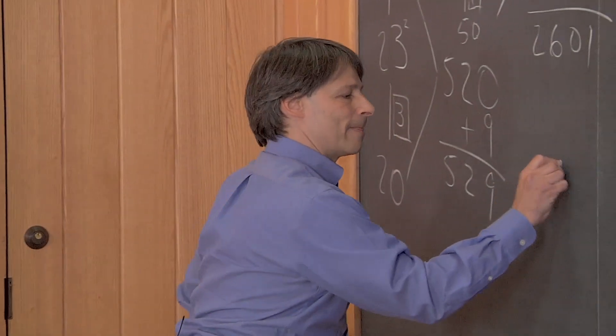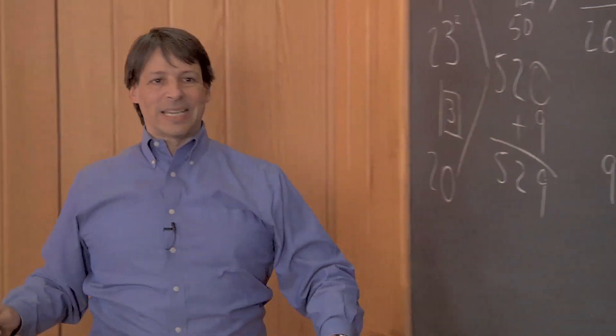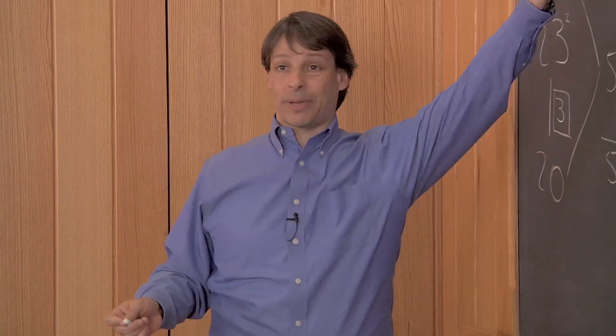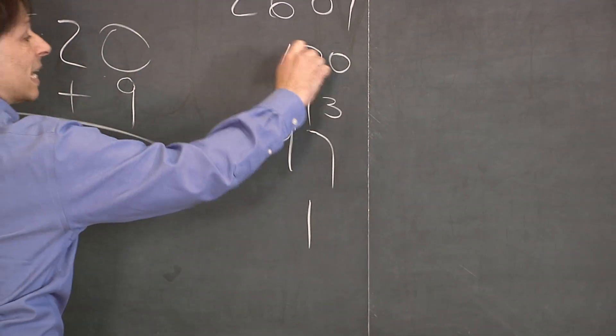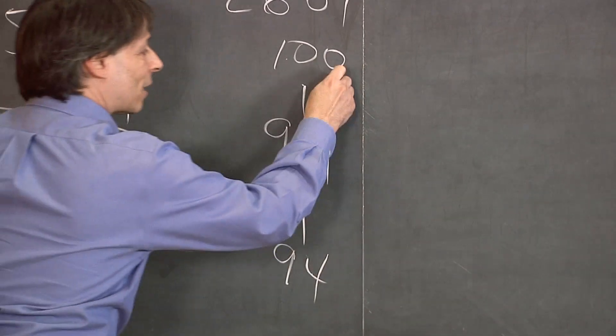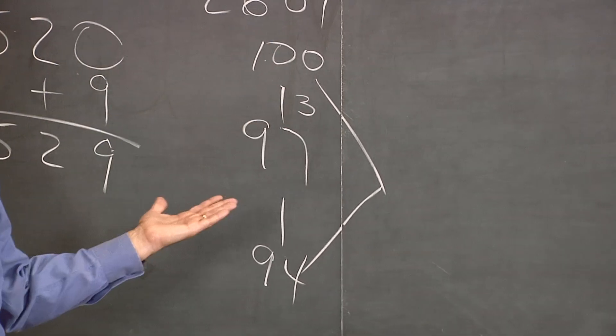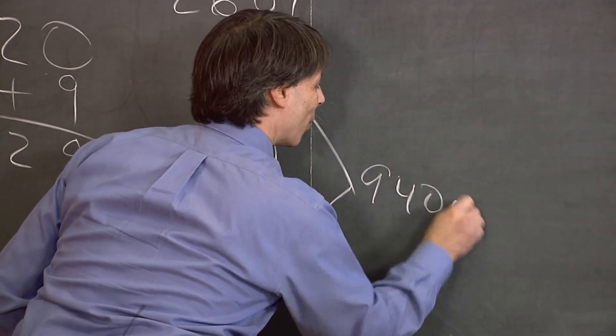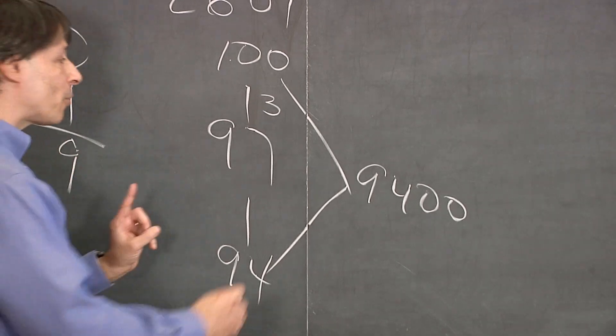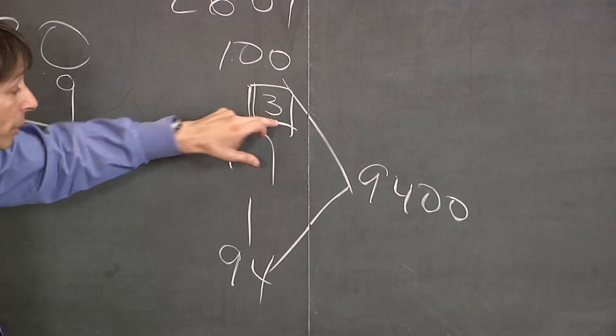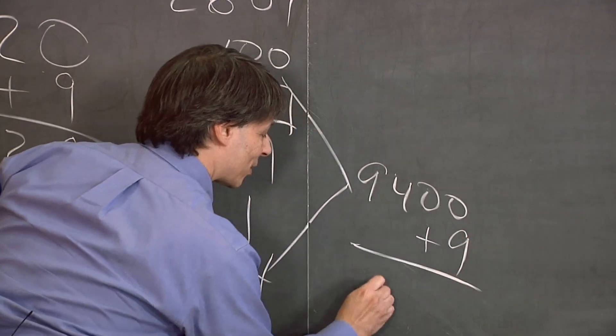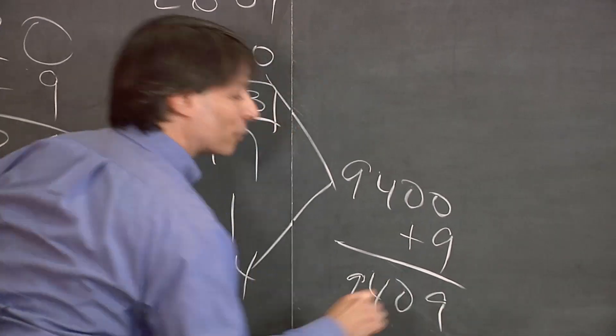Here let's do another example. Let's try the square of 97 this time. 97. This is an example where we're going to go up instead of down, because the nearest easy number here would be 100. So I'll go up 3 to 100, down 3 to 94. Now you tell me 94 times 100 is 9,400. Almost done. All we have to add is the square of 3. Not the square of 7 by the way. We only traveled 3 to get up to 100. 3 squared is 9 and that's your answer. 9,409.